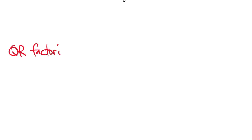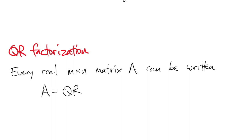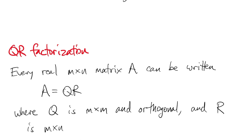Now we're ready to talk about a very important fundamental factorization, the QR factorization. Every real matrix M by N can be written as the product of Q times R, where Q is an M by M orthogonal matrix, and R is M by N and upper triangular.